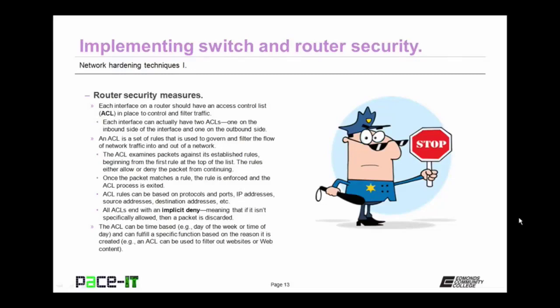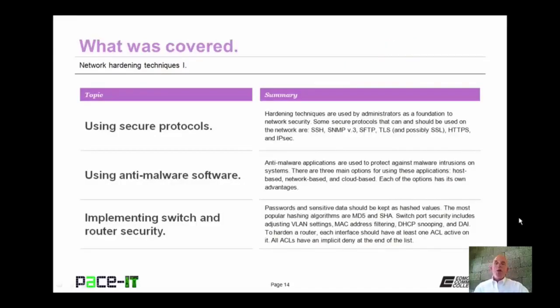The ACL can be time-based, as in day of the week or time of day, and it can fulfill a specific function based on the reason it is created — for example, an ACL can be used to filter out websites or web content. That concludes this session on Network Hardening Techniques Part 1. I talked about using secure protocols, then we moved on to using anti-malware software, and we concluded with a brief discussion on implementing switch and router security. On behalf of Pace IT, thank you for watching this session, and I hope to do another one soon.